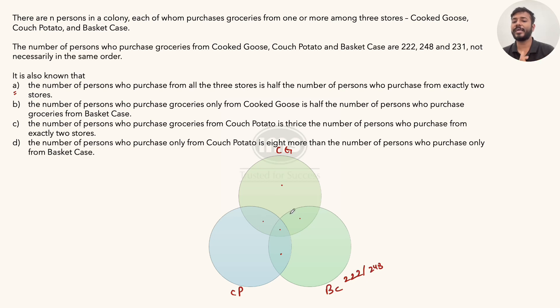So at least I can say BC's total is one of the two: either it is 222 or it is 248. Now, moving on, the C statement: The number of persons who purchase groceries from Couch Potato is three times the number of persons who purchase from exactly two stores. CP's total should be one third of exactly two.